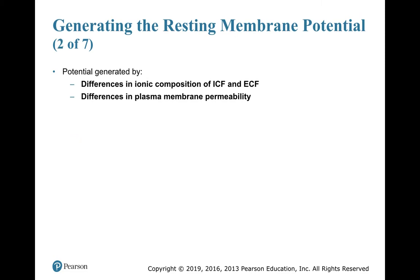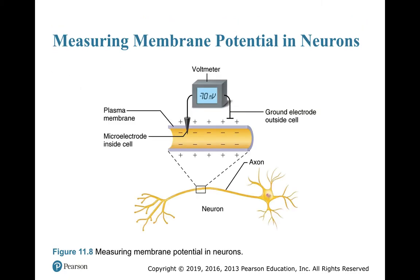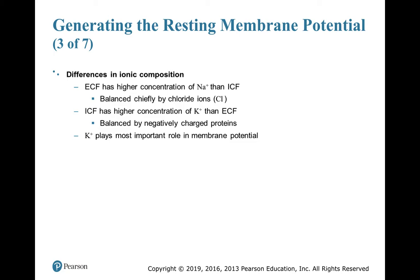That potential difference reflects differences in the ionic concentration of the intracellular and extracellular fluid, as well as differences in membrane permeability. Here's an artist's rendition showing a voltmeter with a probe inside and outside the cell — the difference is minus 70 millivolts, negative inside and positive outside. The extracellular fluid has a higher concentration of sodium, balanced by chloride ions. The intracellular fluid has more potassium, and that positive charge is balanced by proteins, which carry a slightly negative charge.